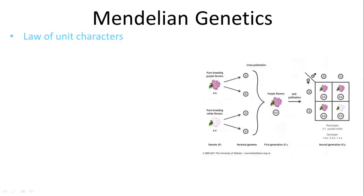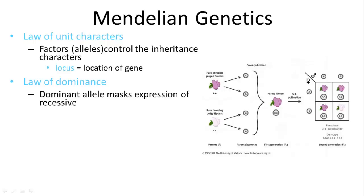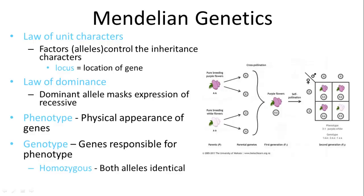From his experiments, Mendel formed several laws. The law of unit character states that factors or alleles control the inheritance of characters, and the locus is the location of a gene. The law of dominance states that some alleles are dominant to others — if you have both in a genome, one from each parent, the dominant allele masks the expression of the recessive. The phenotype is the physical appearance and the genotype is the actual genes. You can be homozygous dominant, homozygous recessive, or heterozygous.